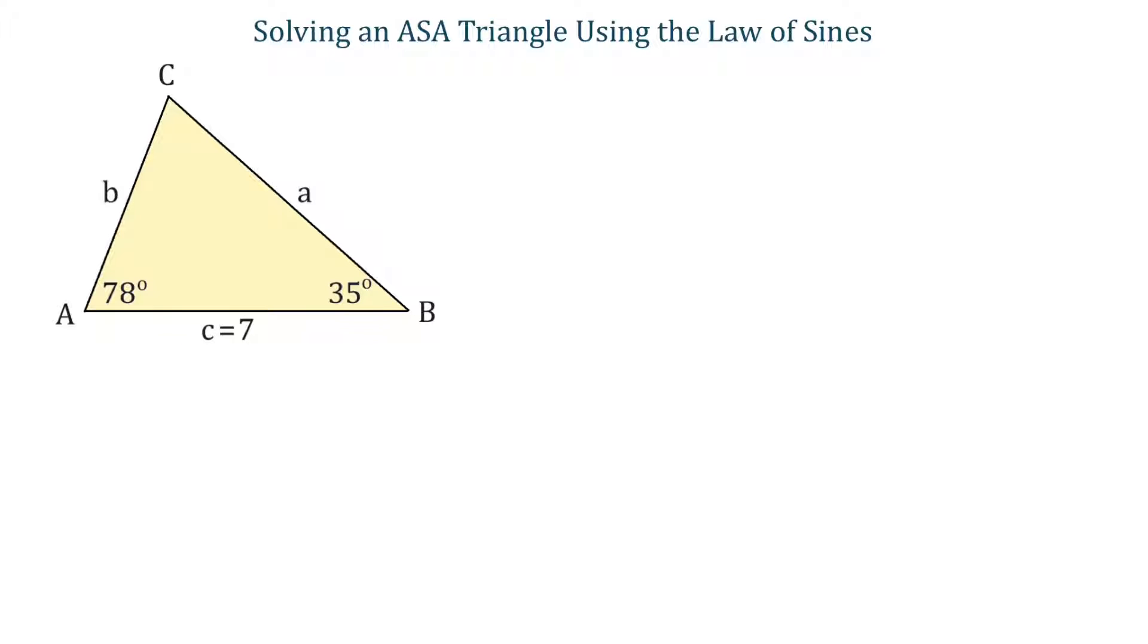Hello, in this figure we have an oblique triangle with side C of 7 units. Angle A is 78 degrees, angle B is 35 degrees, and both these angles are adjacent to side C.